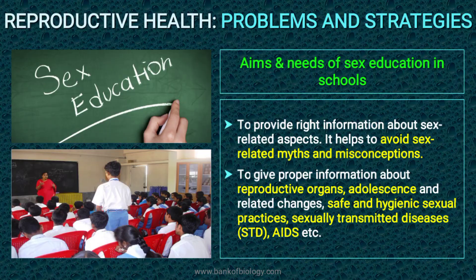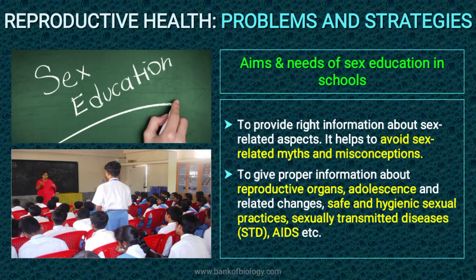What are the aims and needs of sex education in schools? To provide right information about sex-related aspects, helping to avoid sex-related myths and misconceptions. To give proper information about reproductive organs, adolescence, becoming adult, and related changes. Safe and hygienic sexual practices, sexually transmitted diseases like AIDS, etc. — proper awareness about these should be included in school literature.